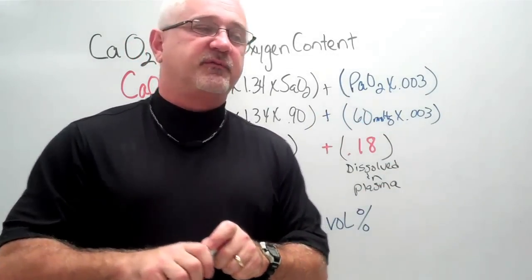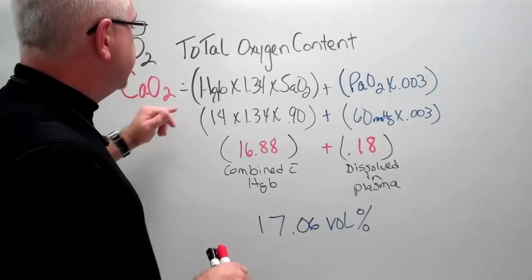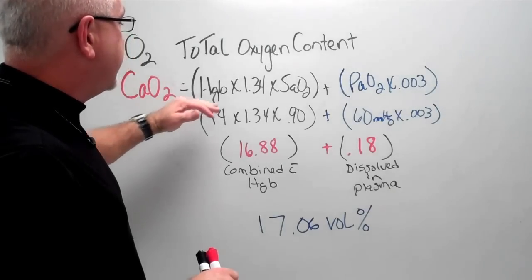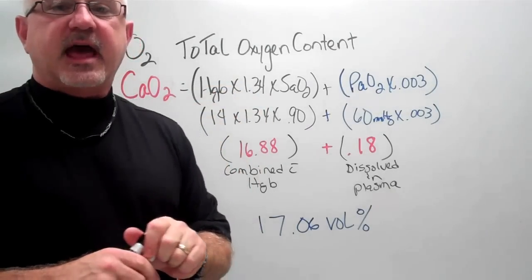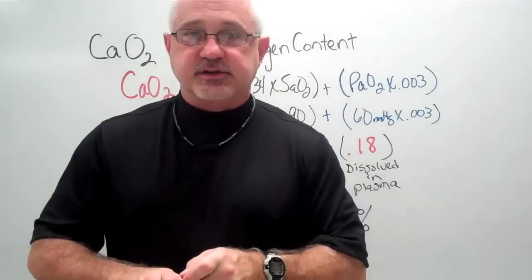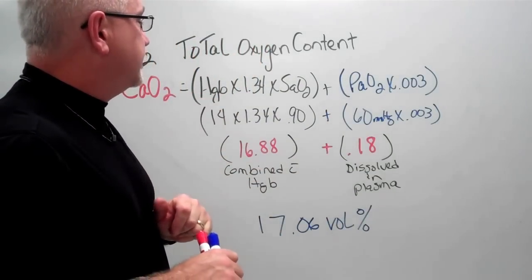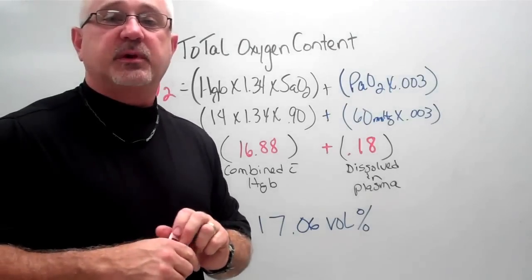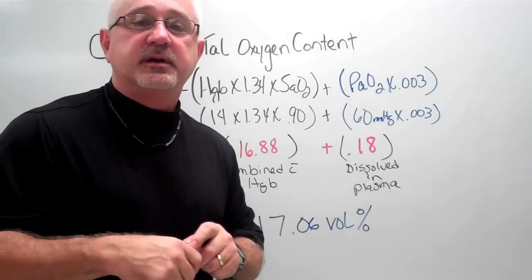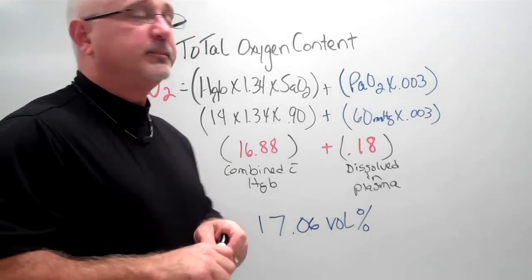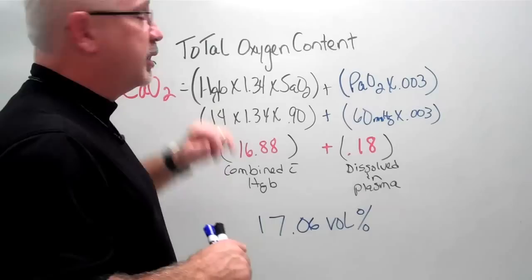But again, what we're looking for is there enough oxygen carrying capacity in the arterial blood to adequately oxygenate the tissue. If we have an inadequate hemoglobin level, then we're going to give our patients some iron or possibly blood so we can get this hemoglobin level up.